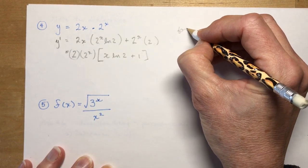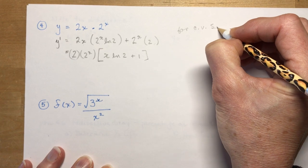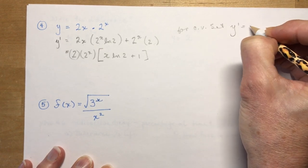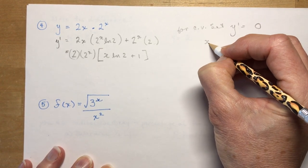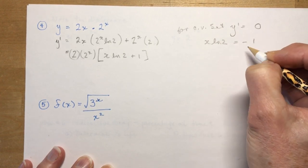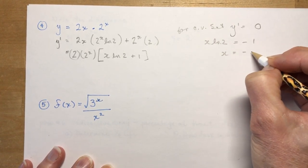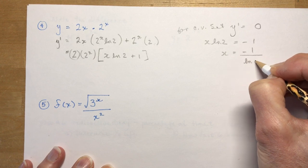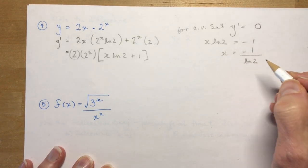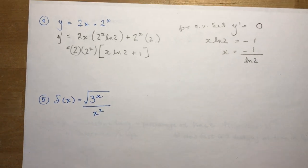So for critical values, set y prime equal to 0. And I would get x ln 2 is equal to minus 1. So x equals minus 1 over ln 2. Make sure you leave the ln's in.